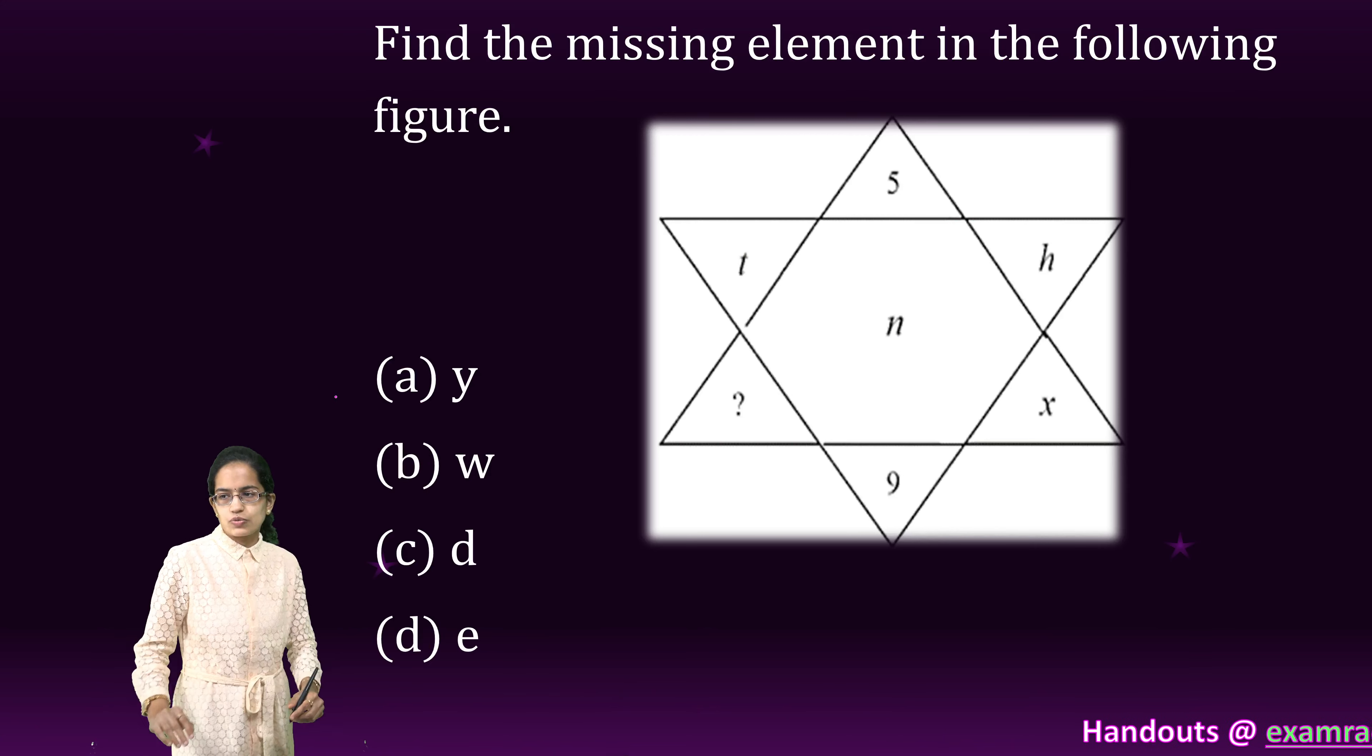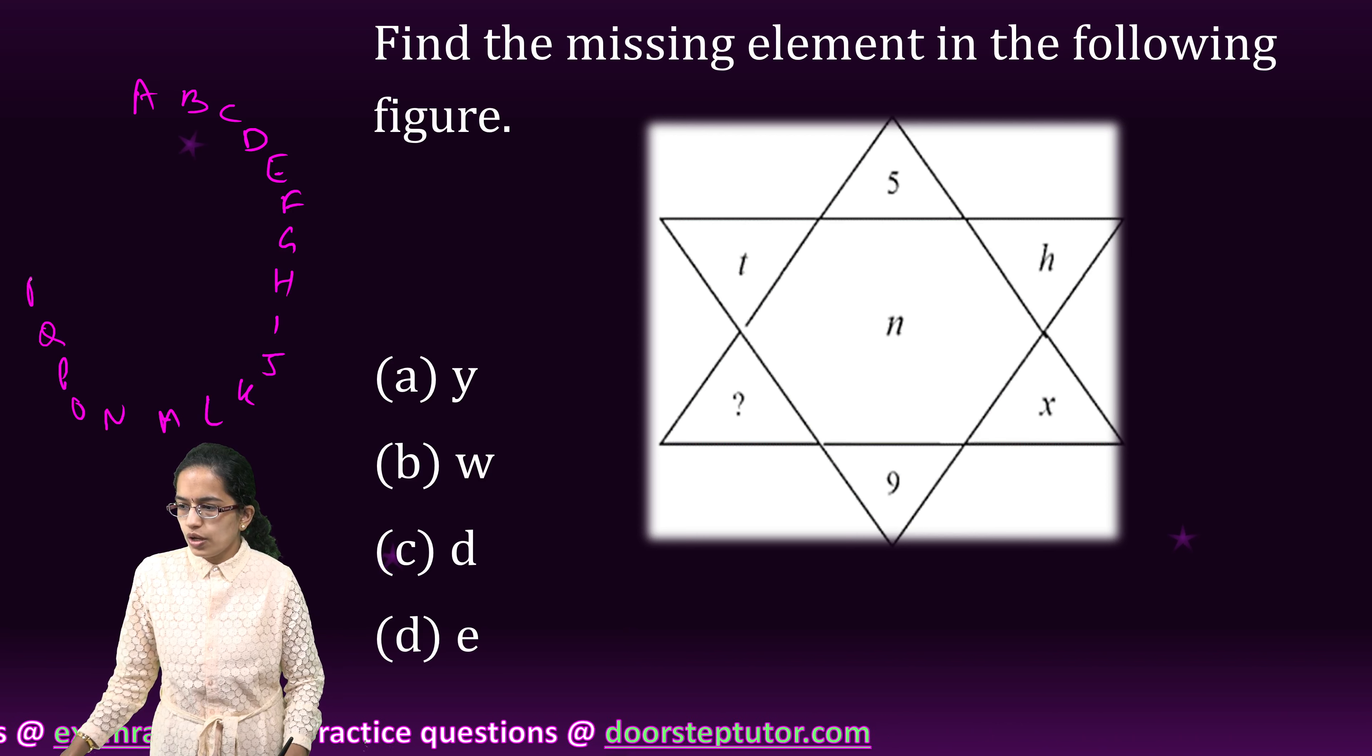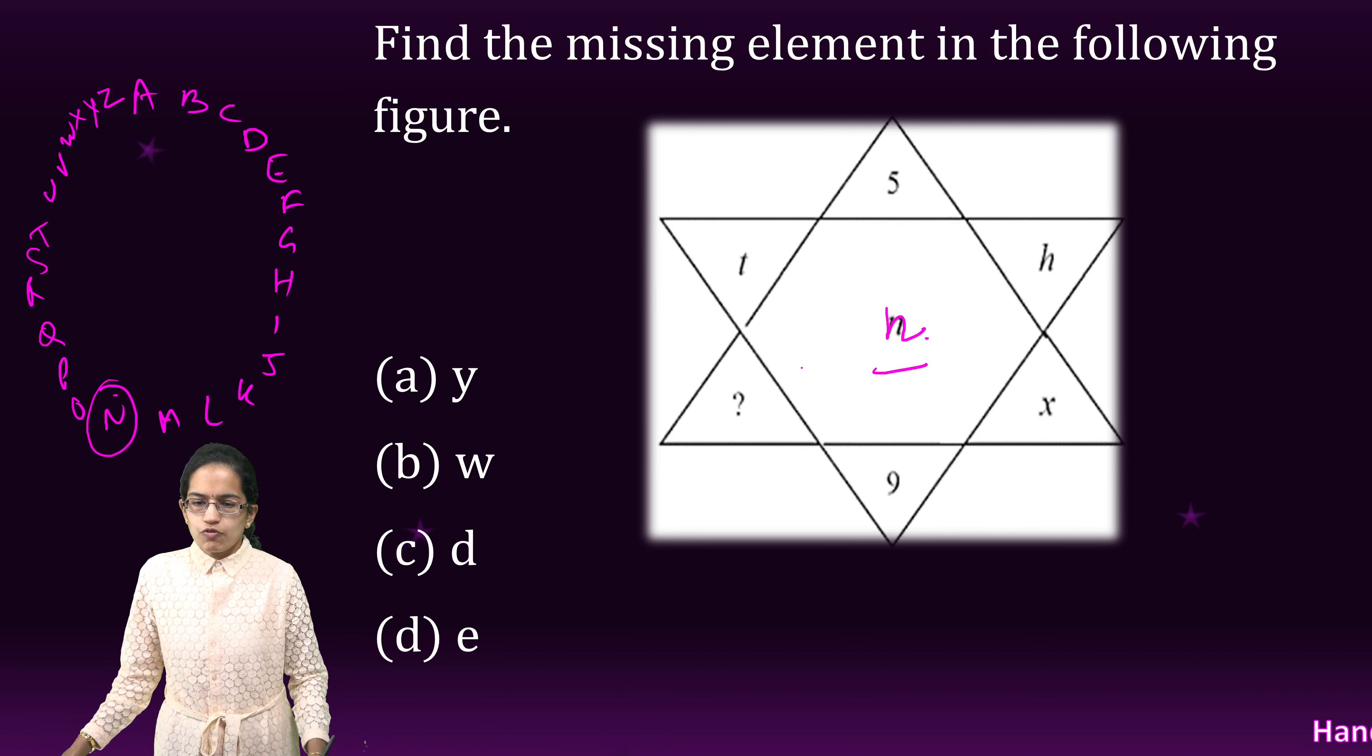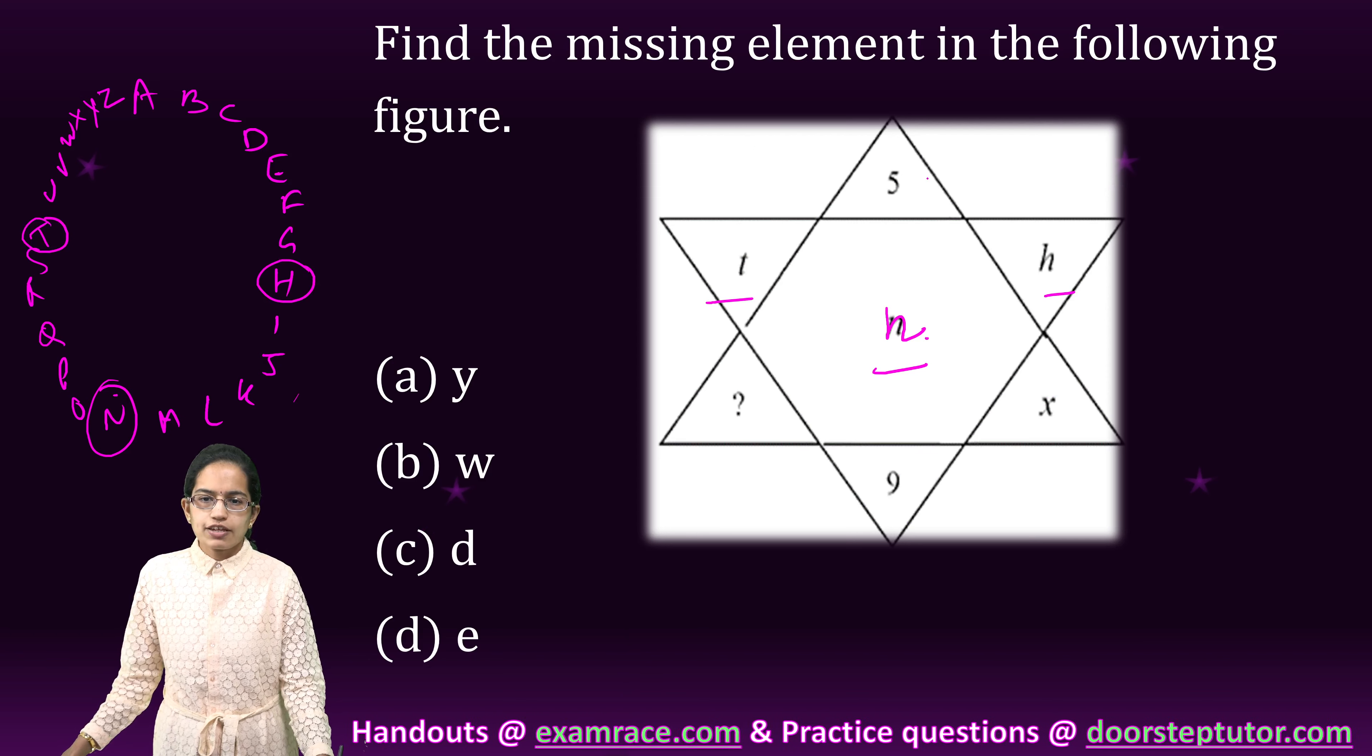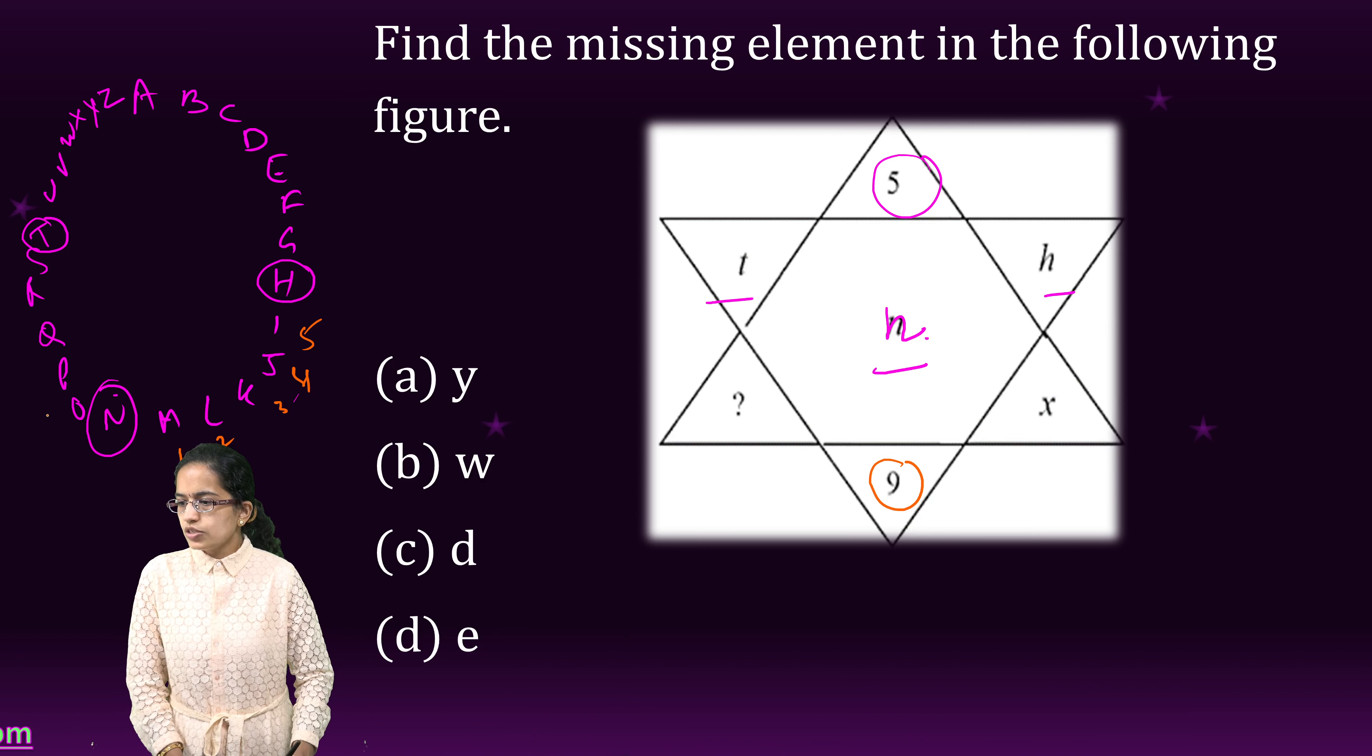This is a very interesting question. To solve this, I simply write A to Z in a circle. A B C D E F G H I J K L M N O P Q R S T U V W X Y and Z. Now I have N in the middle. So I circle N. From N, I have H and T. So I move here 5 points and I have H. I move here 5 points and I have T. And therefore it is 5 given here. In the next case, it is 9 given here. And it is X. So I move 9 points. So 5 points is 1, 2, 3, 4 and 5 gap. So here it is 1, 2, 3, 4 and 5. Then 6, 7, 8 and 9.